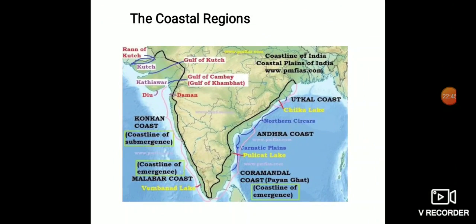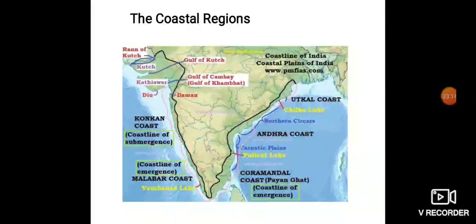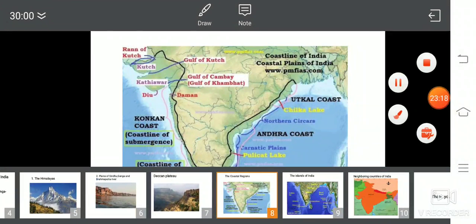The fifth region is the coastal regions. From the time of the Harappan civilization, ancient India had trade relations with western countries. This trade was carried on by sea.